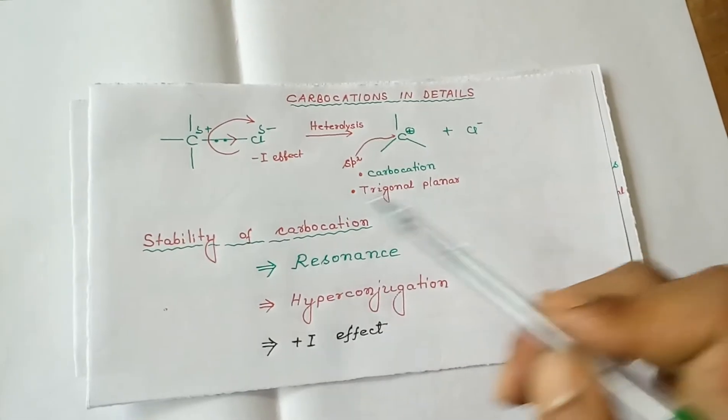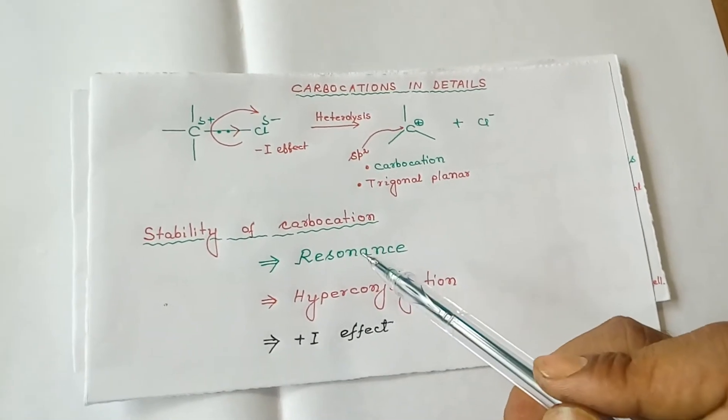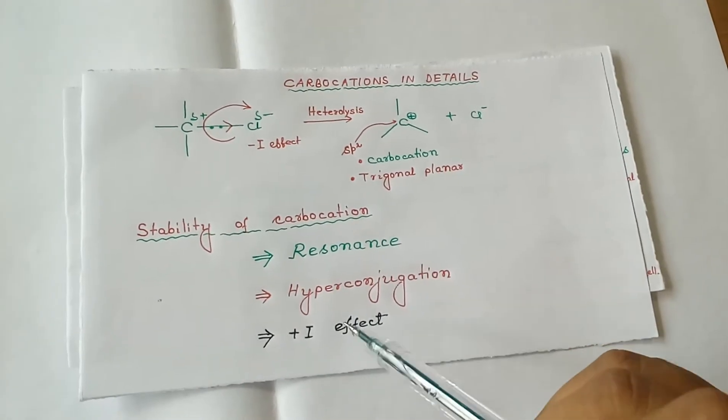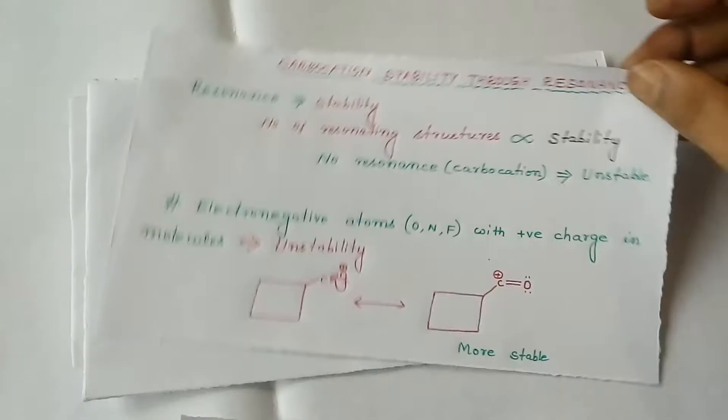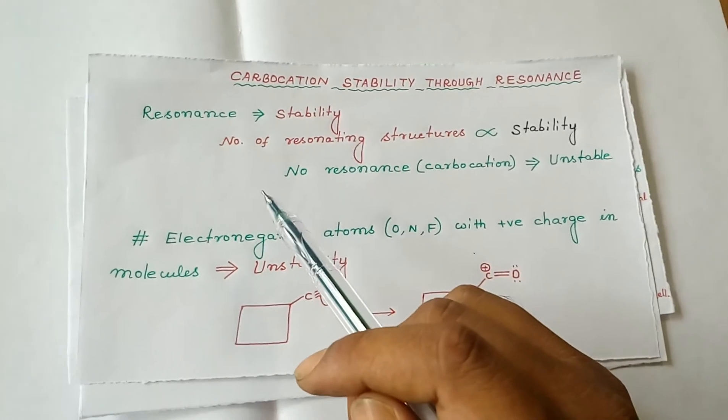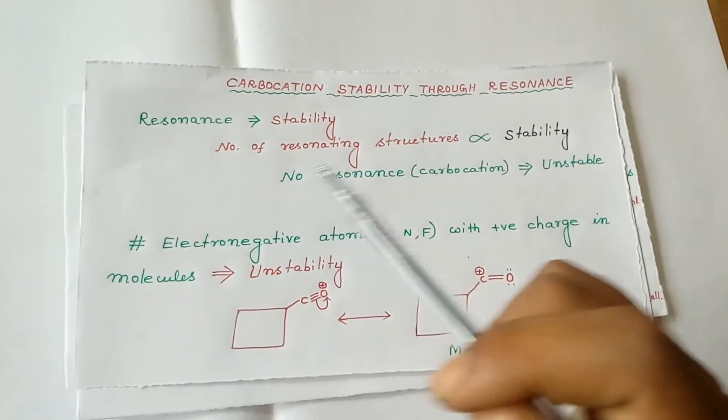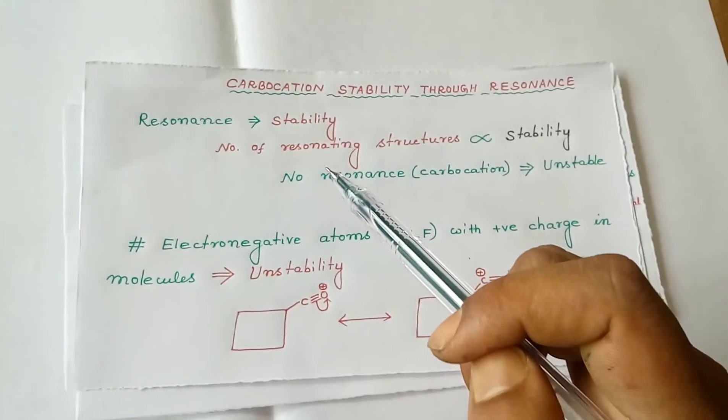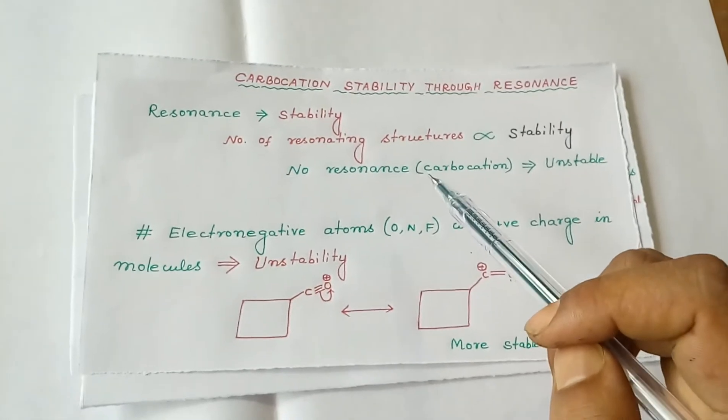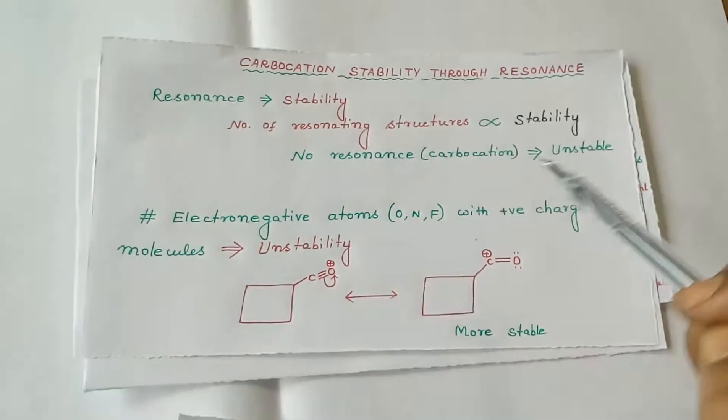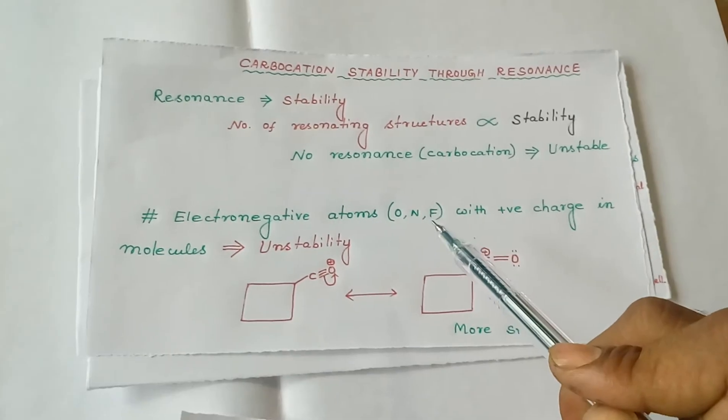Stability of carbocation can be explained by three concepts: resonance, hyperconjugation, and +I inductive effect. Carbocation stability through resonance: resonance implies stability. More resonating structures means the molecule is more stable. No resonating structures in a carbocation means it is unstable. Electronegative atoms like oxygen, nitrogen, or fluorine, if they possess positive charge, make the molecule unstable.